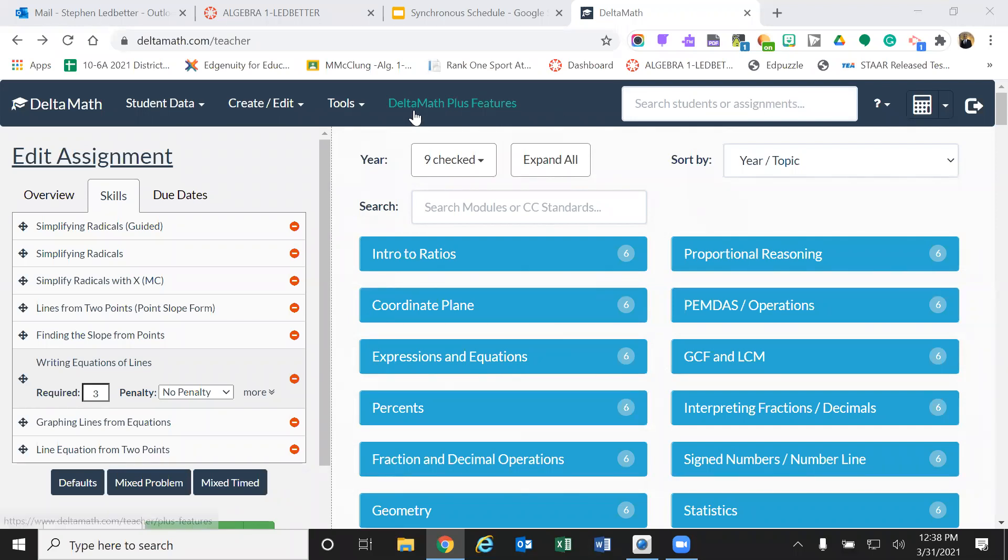Hey, this is Coach Libeter. We're doing 8.1. This is Delta Math. And so I'm doing the writing. If you see here, I'm doing writing equations of a line. You only have three of them here to do in mind. We're not penalizing you if you miss it. But it's just to spiral in lessons that we've taught before. So we've already gone over this.